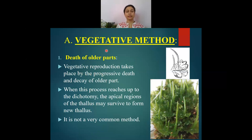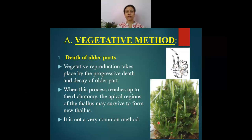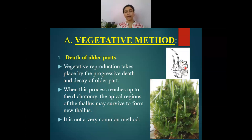The first vegetative method is by death of older parts. Progressive death and decay of the older part of the plant body occurs and this process may reach up to the dichotomy, leaving only the apical regions of the thallus. This apical region may survive and regenerate a new plant body; however, this is not a very common method of vegetative reproduction in Anthoceros.